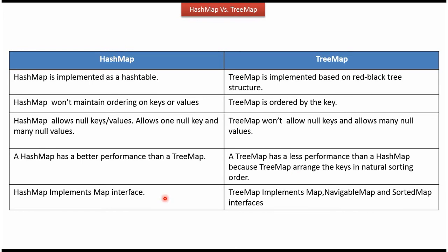HashMap implements the map interface, while TreeMap implements the map, navigable map, and sorted map interfaces. That covers the difference between HashMap and TreeMap. Thanks for watching.